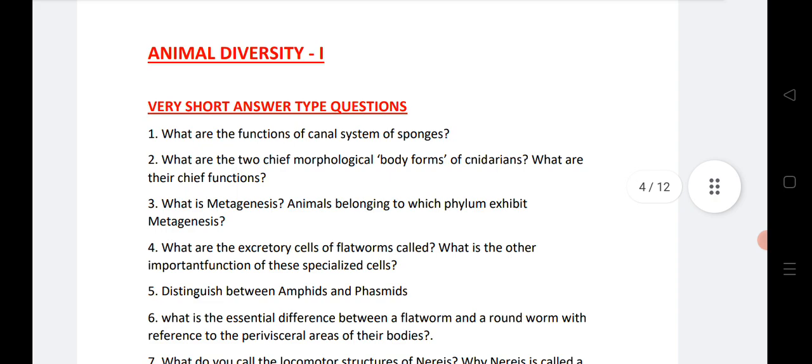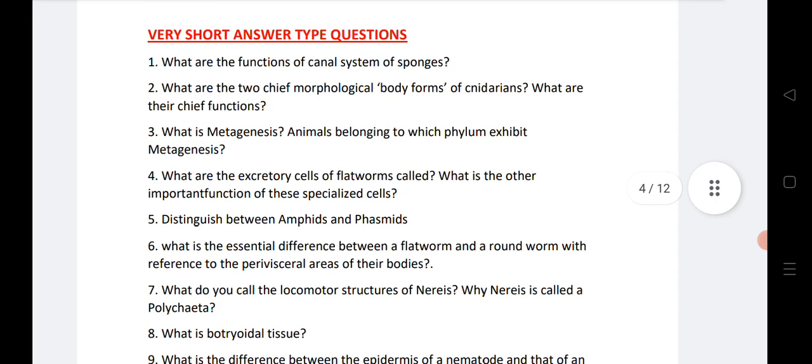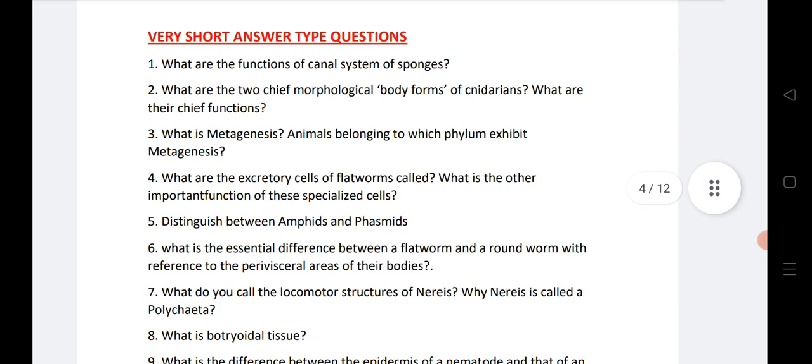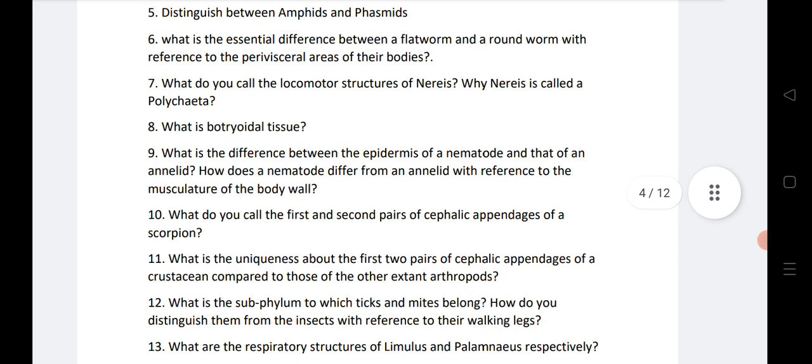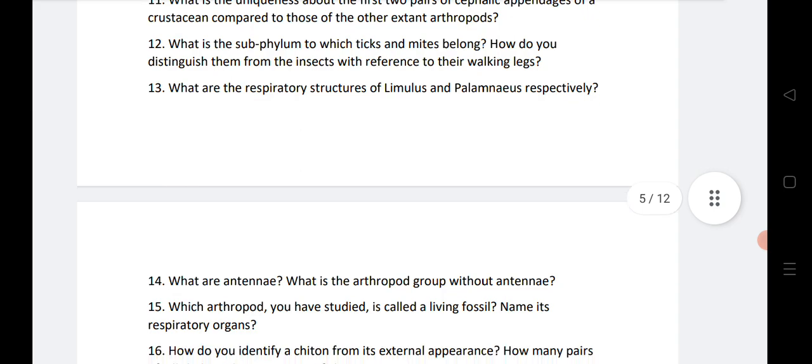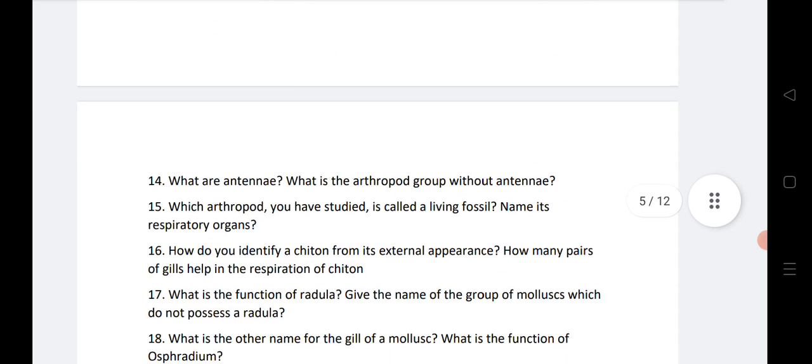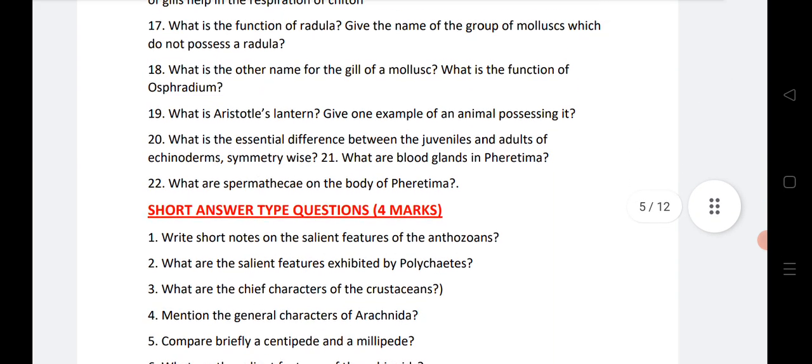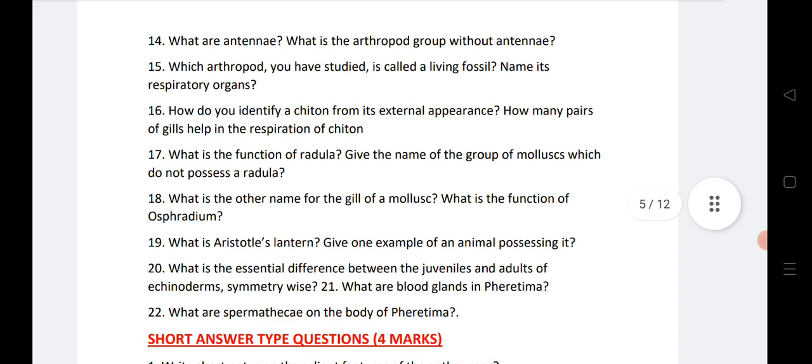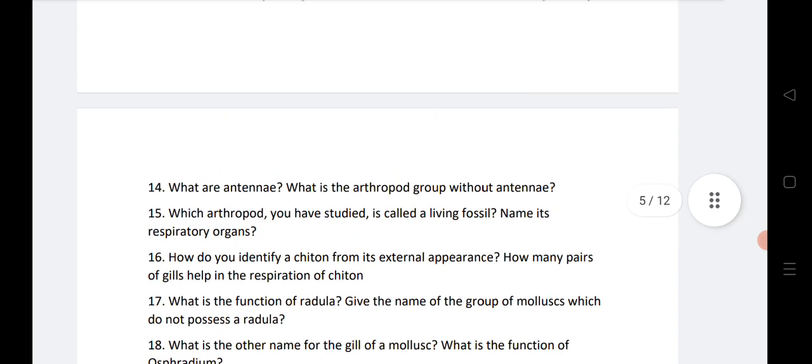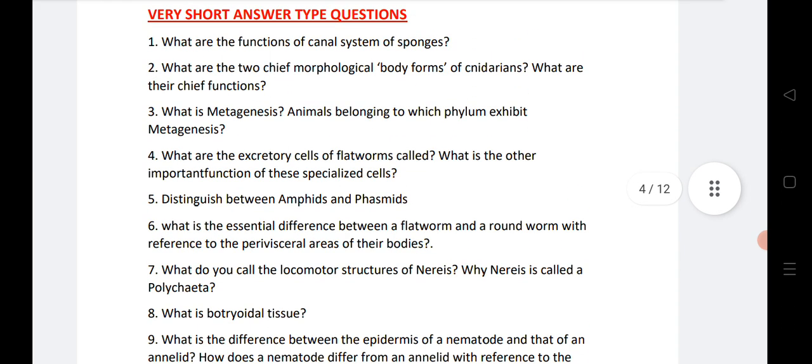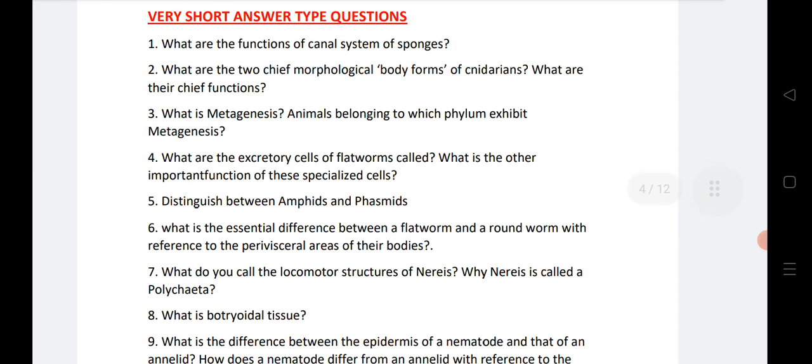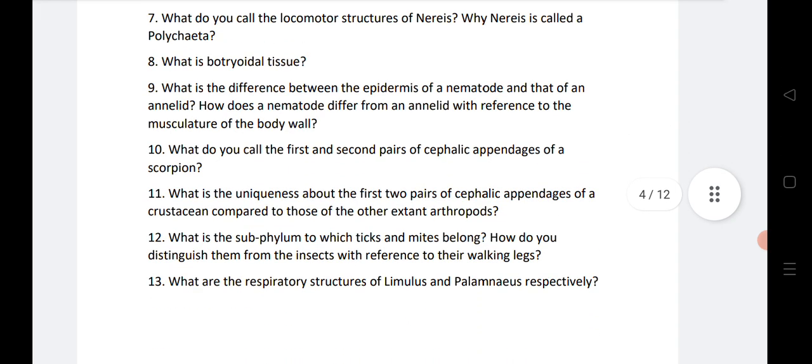Animal Diversity, again very important chapter. We have listed very short questions of two marks, 1 to 9. Next 13 VSAQs we have given as well as total we have given 22 VSAQs. 14 to 22 you can note and 1 to 13 questions is here. First you can note 1 to 8, next from 8 to 13.